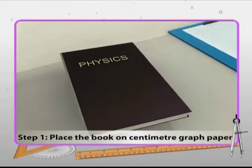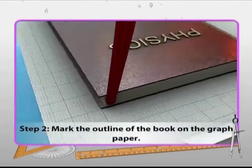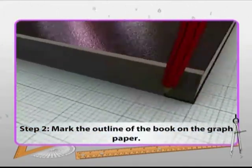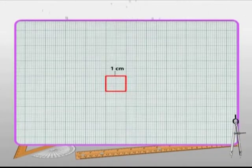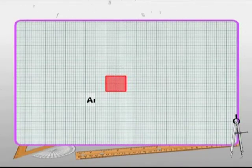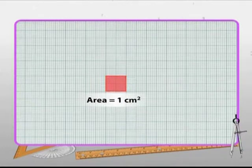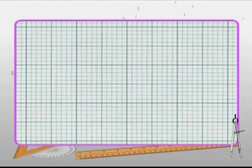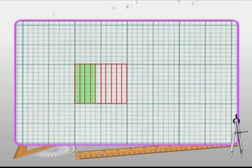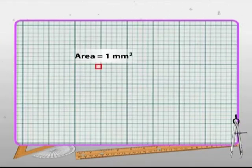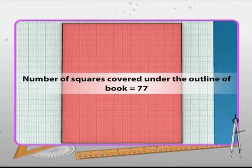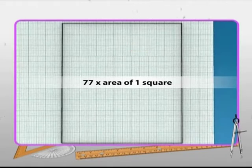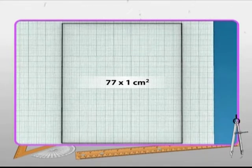First, place the book on a graph paper. Then mark the outline of the book on the graph paper using a sharp pencil. Have a look at the graph paper. Each square of the graph paper has a side equal to one centimeter. Hence, the area of each square is one square centimeter. On closely observing the graph, you will see that each one centimeter square is further divided into ten small divisions. Thus, each small square has an area of one millimeter square. Coming back to the activity, let us count the number of squares covered under the outline of the book. Now multiply the number of squares by area of one square that is one centimeter square to get the area of the book.